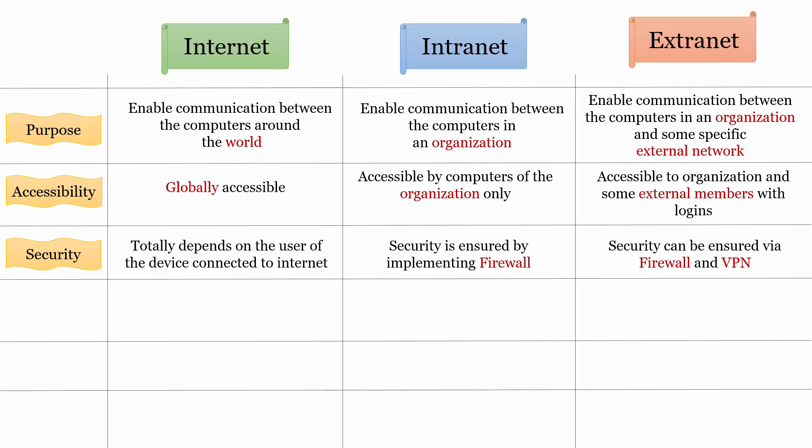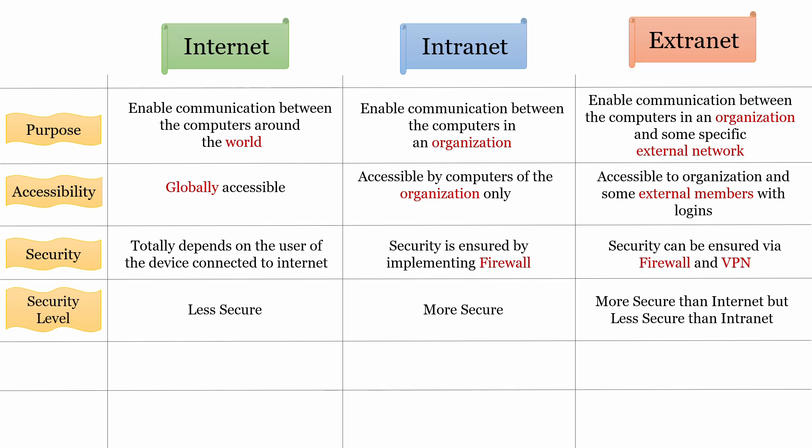If we talk about security: security in internet totally depends on the user of the device connected to internet. The user must have knowledge of what they should access over internet and what not — for example, users must avoid clicking suspicious links. Security in intranet is ensured by implementing a firewall. Security in extranet can be ensured via firewall and VPN. So if we talk about the security level: internet is less secure, intranet is more secure, and extranet is more secure than internet but less secure than intranet.